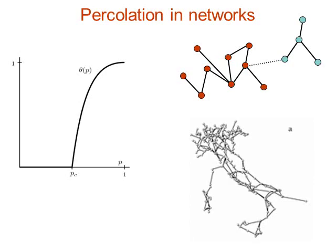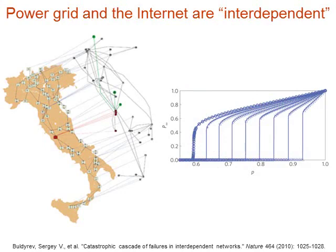You can explain it by accounting for the fact that the power grid doesn't live alone — it depends on the communication system, which in turn depends on the power grid. To control a power generator you need a working router, but a working router needs energy. When a failure occurs in one system, it triggers a failure in the other, which causes another failure — a cascading failure. This cascade generates a discontinuity in the phase transition: instead of a continuous change, you get a sudden jump. This doesn't explain reality exactly, but tells you what ingredients matter. To understand the system, you need to consider that they interact.